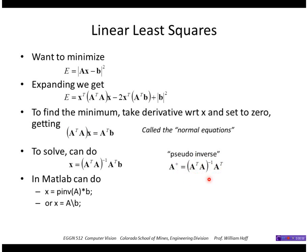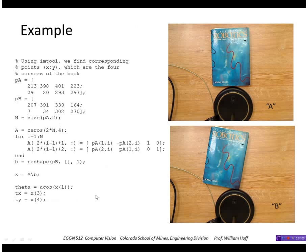Then we can solve using the pseudo-inverse, shown here, and that gives us the solution for our unknown parameters x. In MATLAB that is the pinv command. We saw this example of trying to find a rigid transformation to transform the book in this image to the book in this image. Here are four corresponding points — each column represents an x, y which is a corner of the book. The upper left corner in this image is (213, 29), and that corresponds to the upper left corner in this image which is (207, 7).